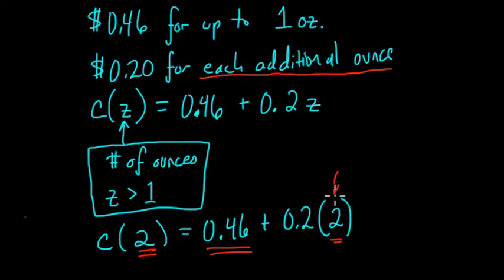What number should go here? What should we put here? Think about it. If we have the 46 cents for the first ounce or 0.46 dollars for the first ounce, then we should only have to add on 20 cents for each additional ounce. This number should be 1. So what do we have to do to 2 to make it 1? Well, we have to subtract 1.